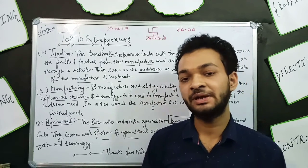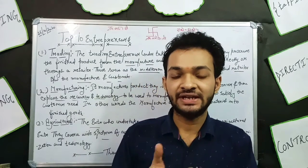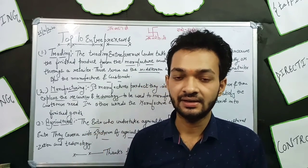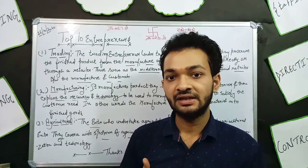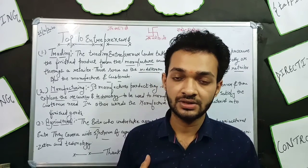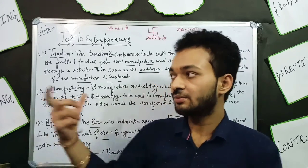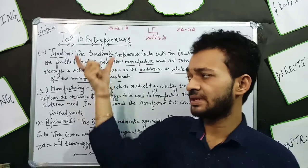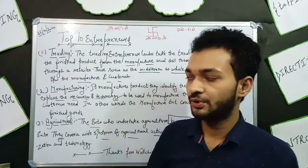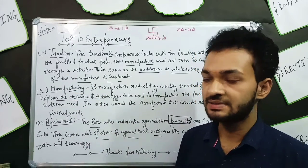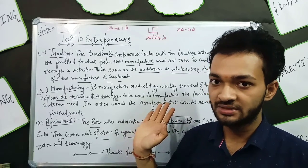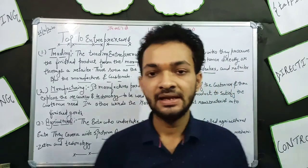Now, we manage our entrepreneurs in some categories, in some items, in some conditions. Some are based on their business, and some are divided on the basis of their technology. In this video, we will study about the entrepreneurs which are based on their business. We are dividing them into: trading entrepreneurs, manufacturing entrepreneurs, and agricultural entrepreneurs.